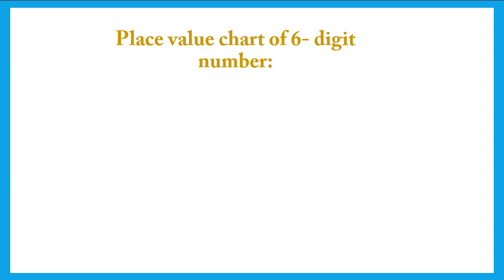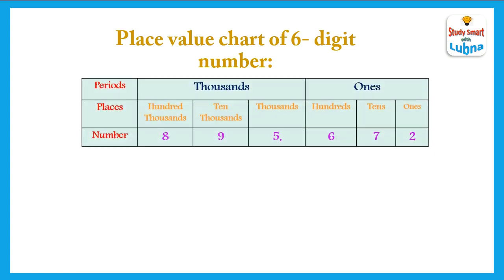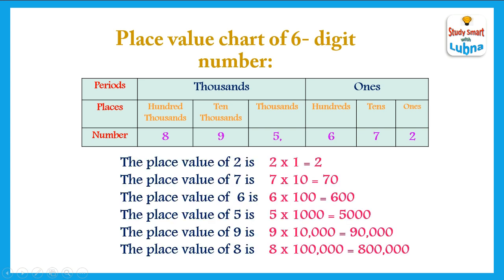Another example of a place value chart for a six digit number. Here you can see another place value chart with ones and thousands periods in the international system. The places are ones, tens, hundreds, thousands, ten thousands, and hundred thousands. The number given is 895,672. The place value of two is two times one equals two. The place value of seven is seven times ten equals seventy. The place value of six is six times one hundred equals six hundred. The place value of five is five times one thousand equals five thousand. The place value of nine is nine times ten thousand equals ninety thousand.